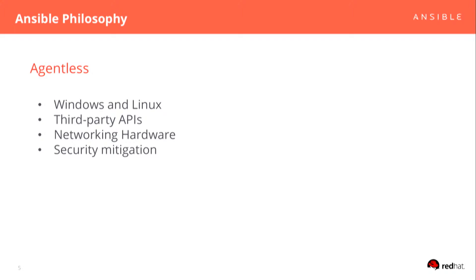Agentless gives us the ability to go across operating systems really easily, because we don't have an agent that needs a fully functioning Ruby install with five million gems to template out a file. That means we support Windows, Linux, BSDs, and also AIX — if any of you are in a combined AWS and AIX environment.